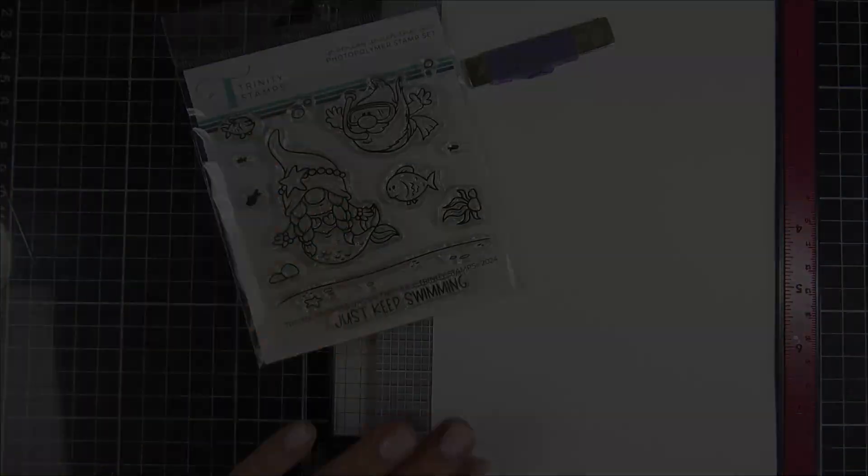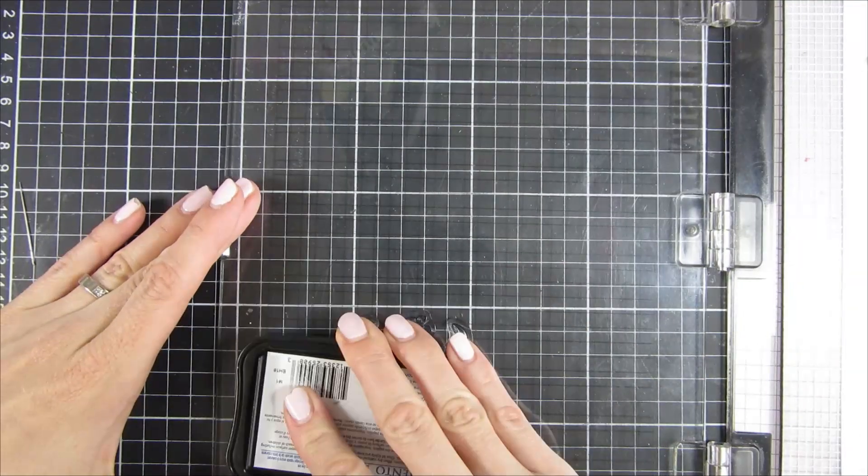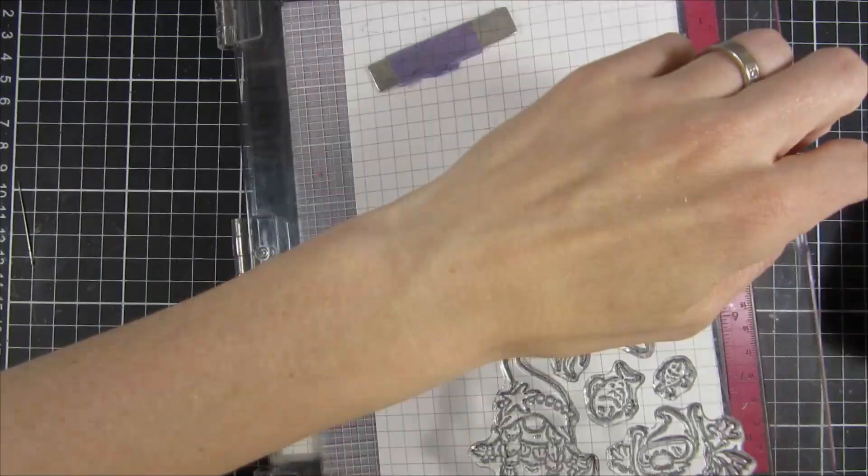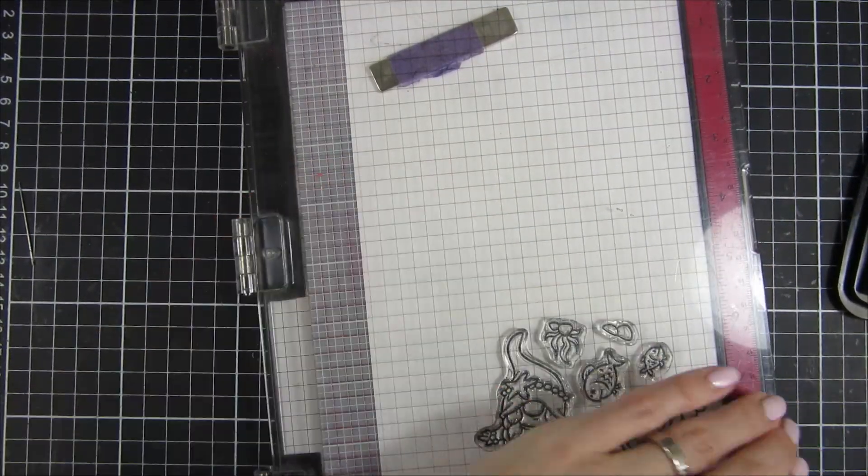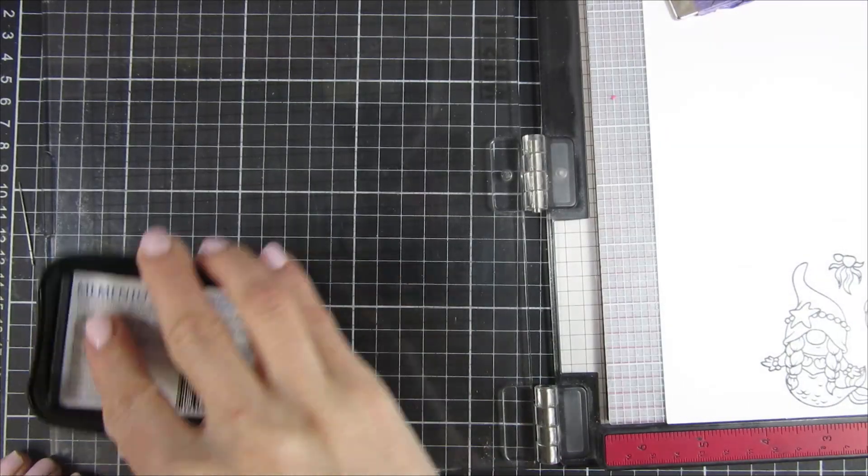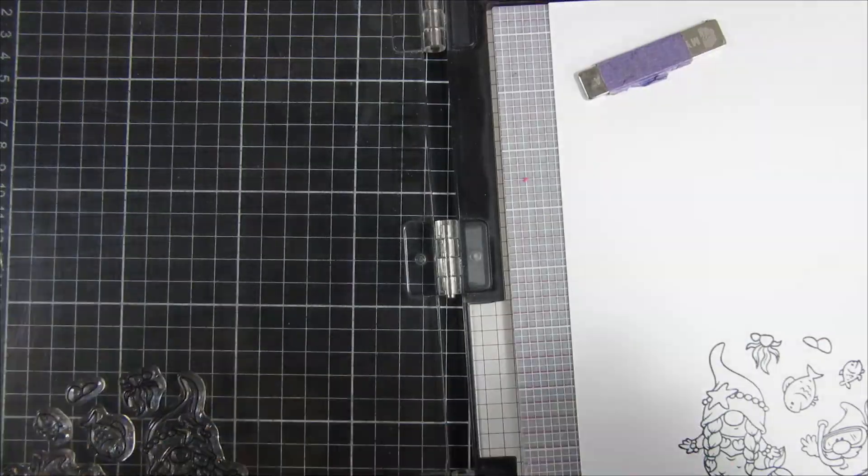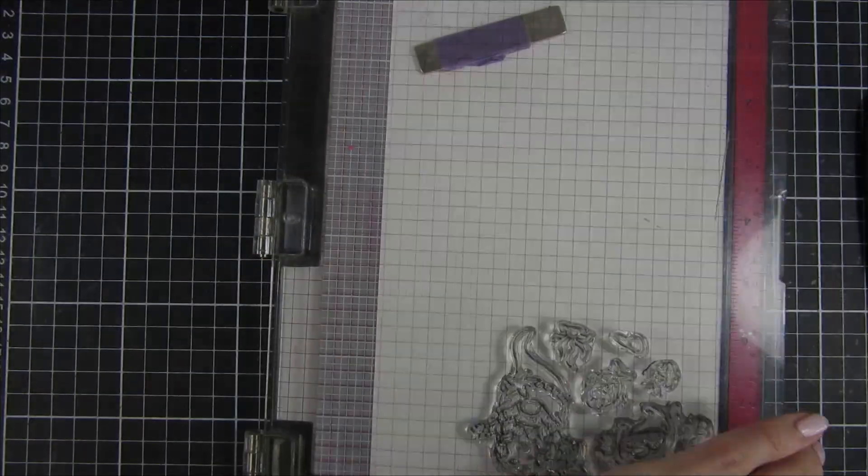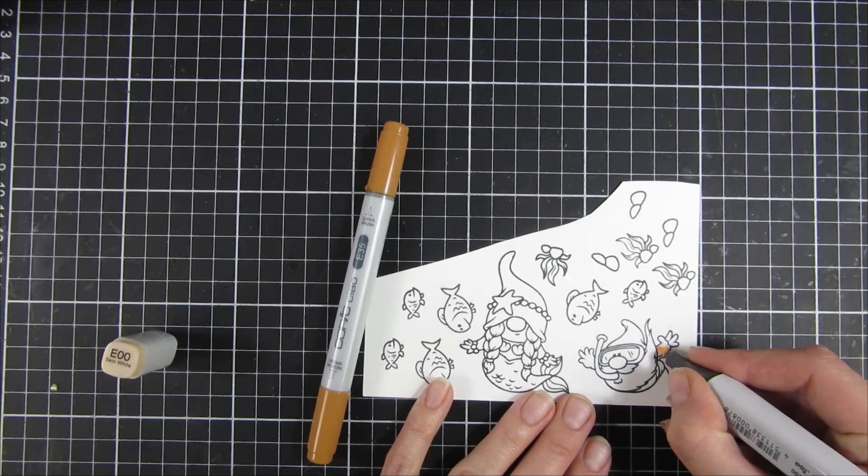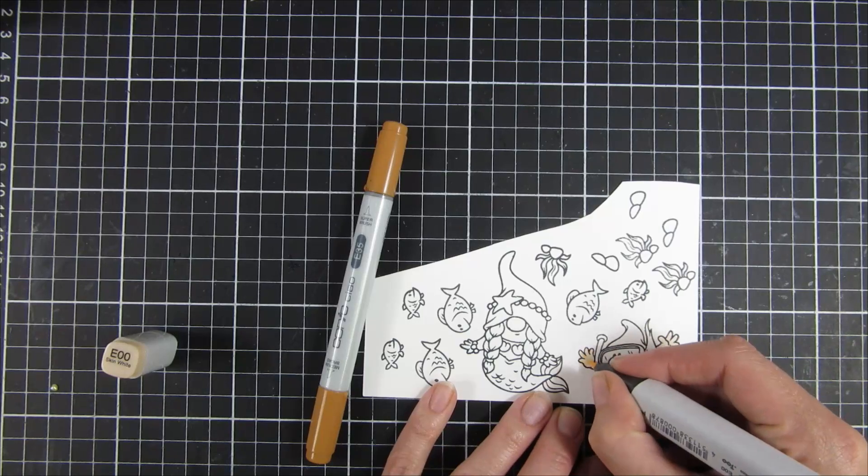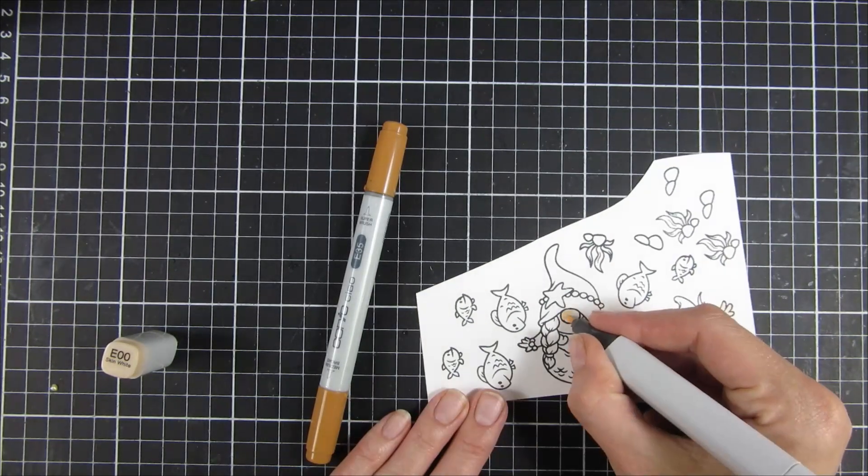For a second project, since I had that circle card base already out on my desk, I decided to go ahead and create another card with that same card base. I stamped out nearly all of the images from the gnome under the sea. Such a cute stamp set! This is also from the latest release from Trinity.